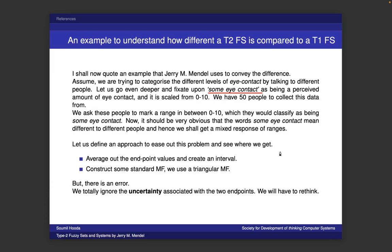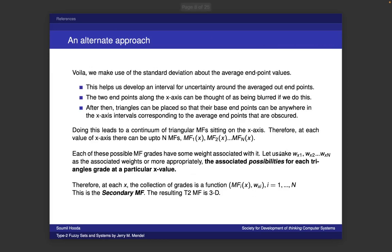Now we need to encompass this. Somebody told me that value 5 is some eye contact; somebody told me that value 2 is some eye contact. How do we model this out? We'll try to make a type 2 fuzzy set. First, we'll take average values — we'll average out all range values we got and find some average values for 'some eye contact.' Then we'll model out the dispersion. The ability to model out dispersion is what makes type 2 fuzzy sets unique and more powerful.